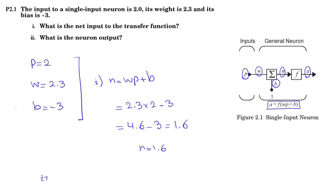For the second part we are asked to find output of the neuron or A. A equals function of N or F of 1.6. But as the transfer function is not determined in this question we cannot find the output. So this is the end of the solution.